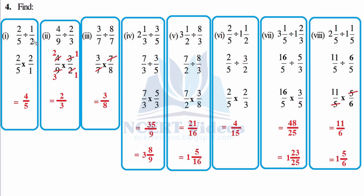So let's do it. First: 2/5 — you know very well — times 2, giving 4 over 5. Second: 4/9 as it is, then changing sign and flipping the fraction, it becomes 3/2. Cutting: 1 to the 2, to the 4, and the 3s cancel out.